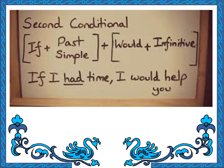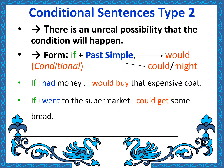This is the rule: there is no real possibility that the condition will happen — something impossible in the present. We use: if + past simple + would, could, or might + infinitive. Two final examples: 'If I had money, I would buy that expensive coat.' And: 'If I went to the supermarket, I could get some bread.' This is the second conditional. See you in lesson number four — thank you very much, bye!